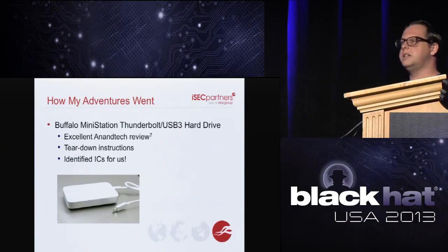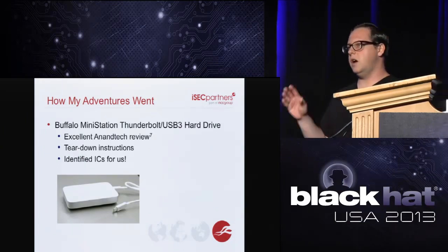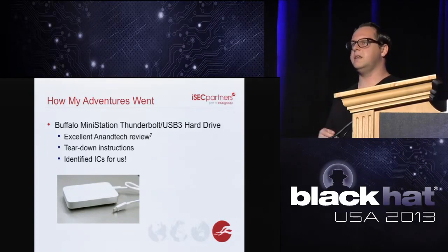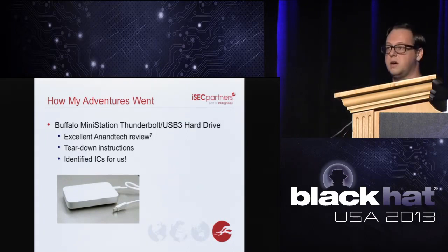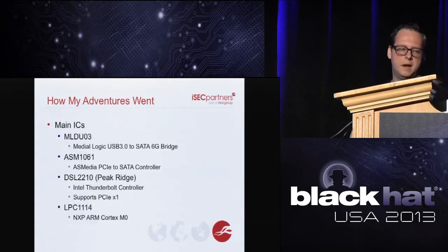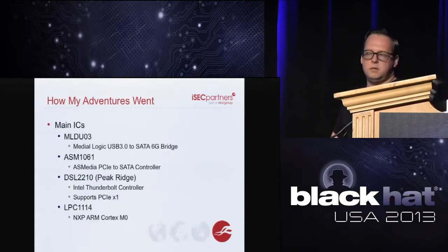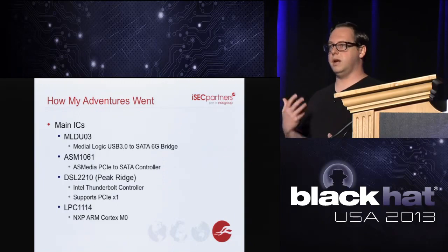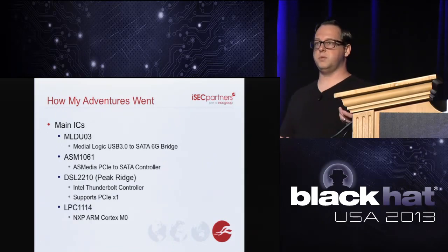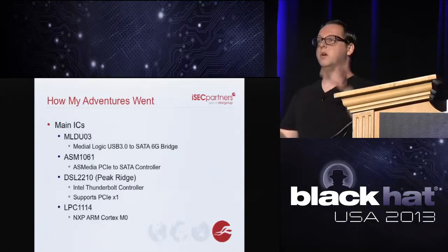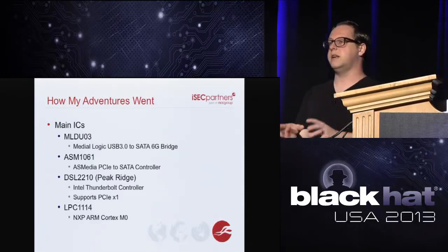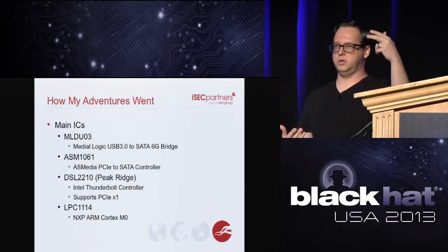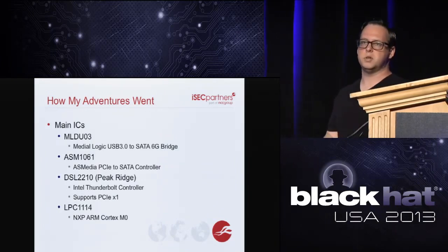Starting with the hard drive: iFixit has an amazing teardown with high-res images and detailed information identifying all the ICs. The main chips: the MLDU3 is the USB to SATA controller, solving the USB 3 to SATA path. The ASM1061 is the PCI Express to SATA controller, which builds out the Thunderbolt path since Thunderbolt is based on PCI Express. The DSL2210 is the Intel Thunderbolt chip, code-named Peak Ridge, connected directly to the Thunderbolt connector.